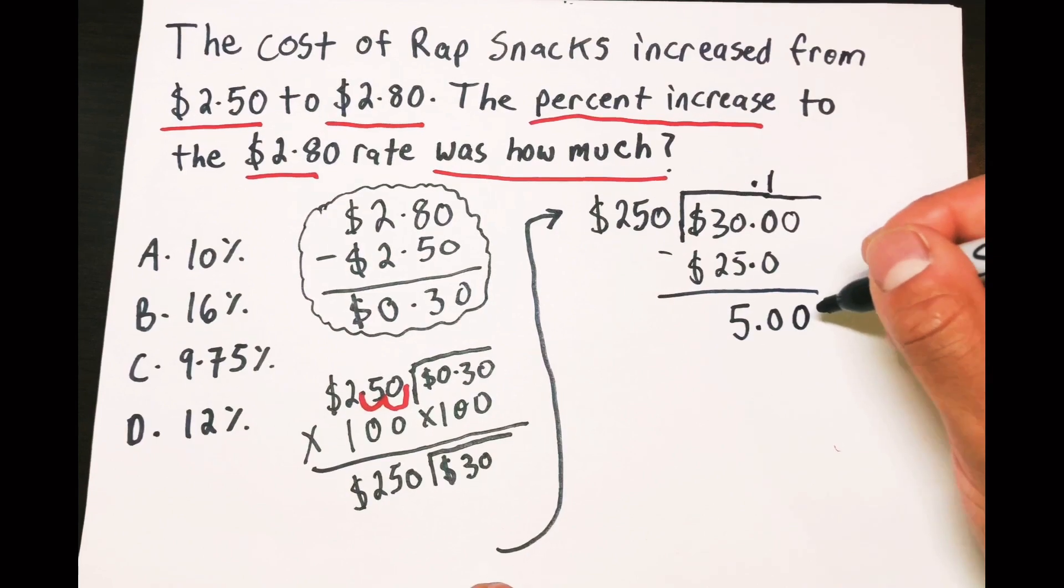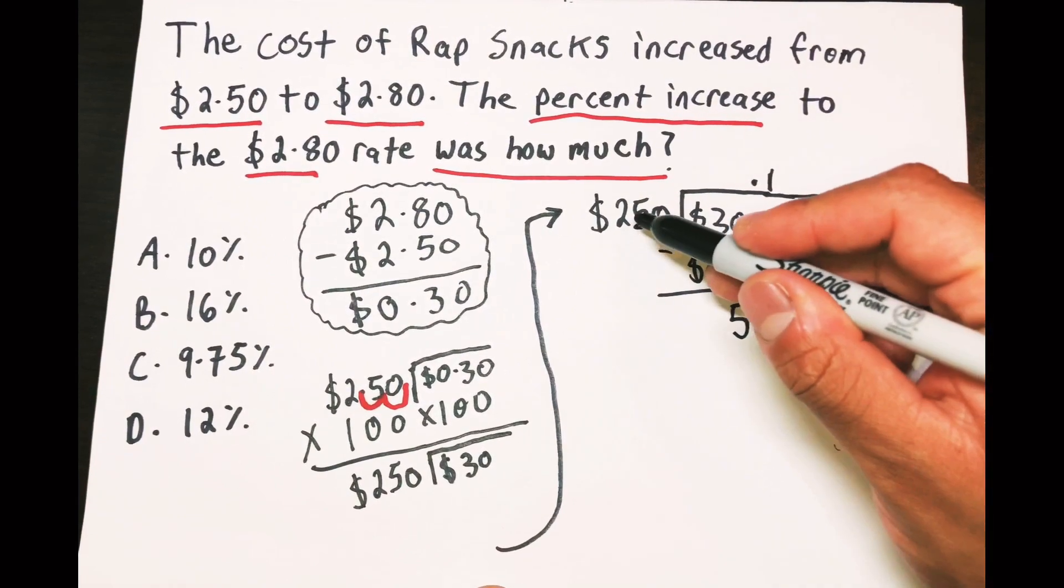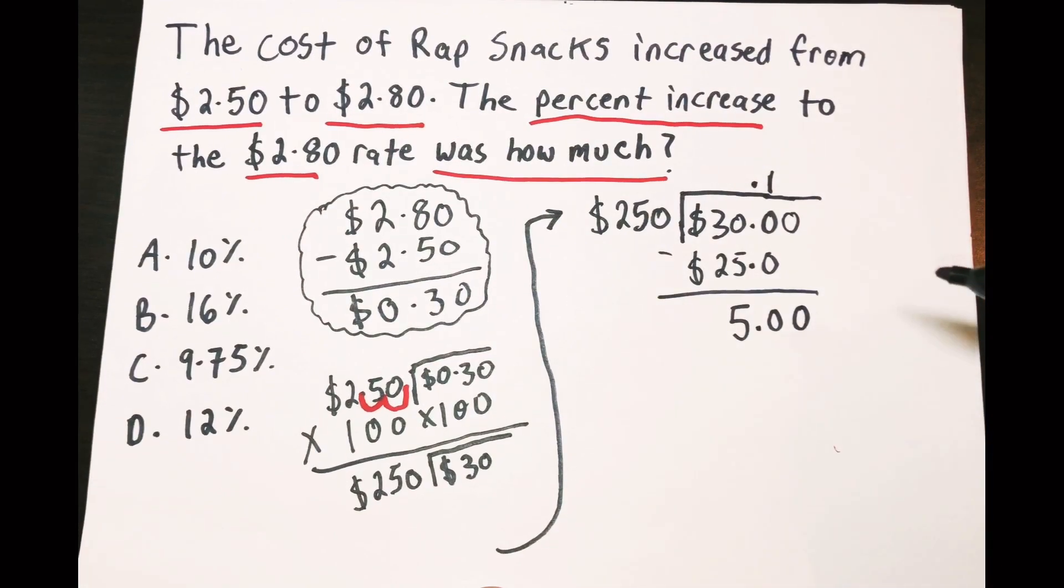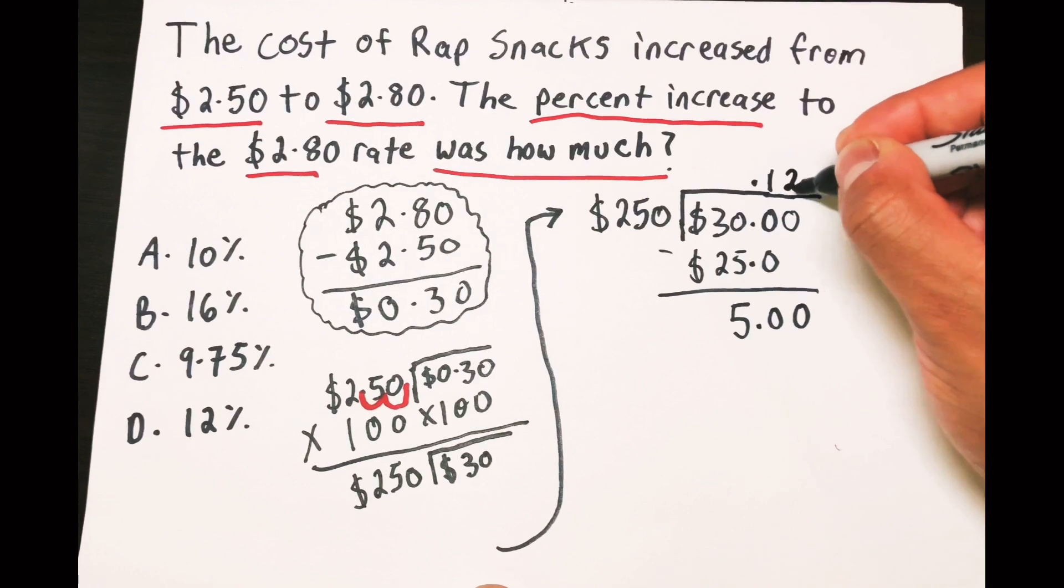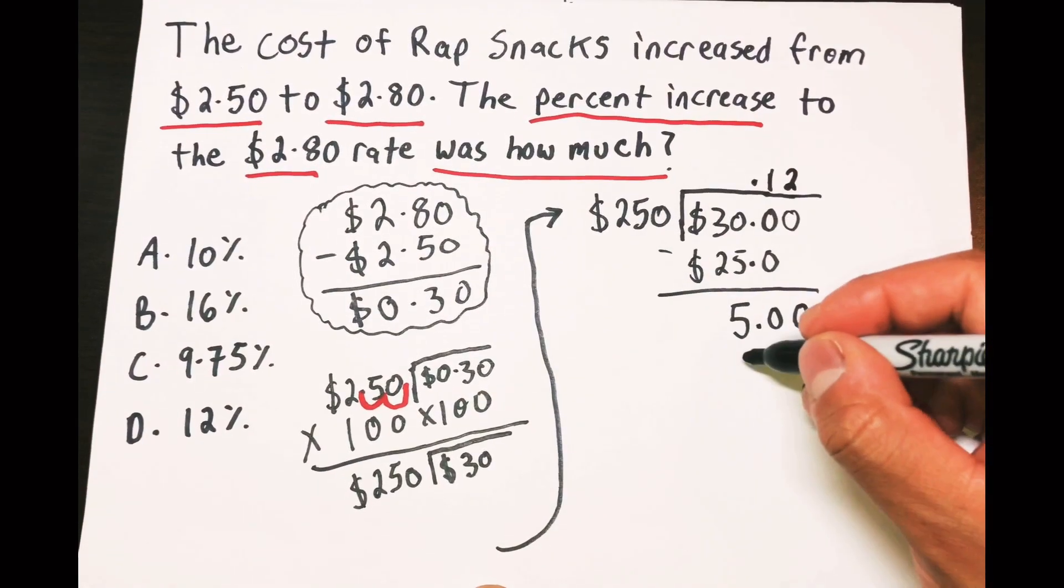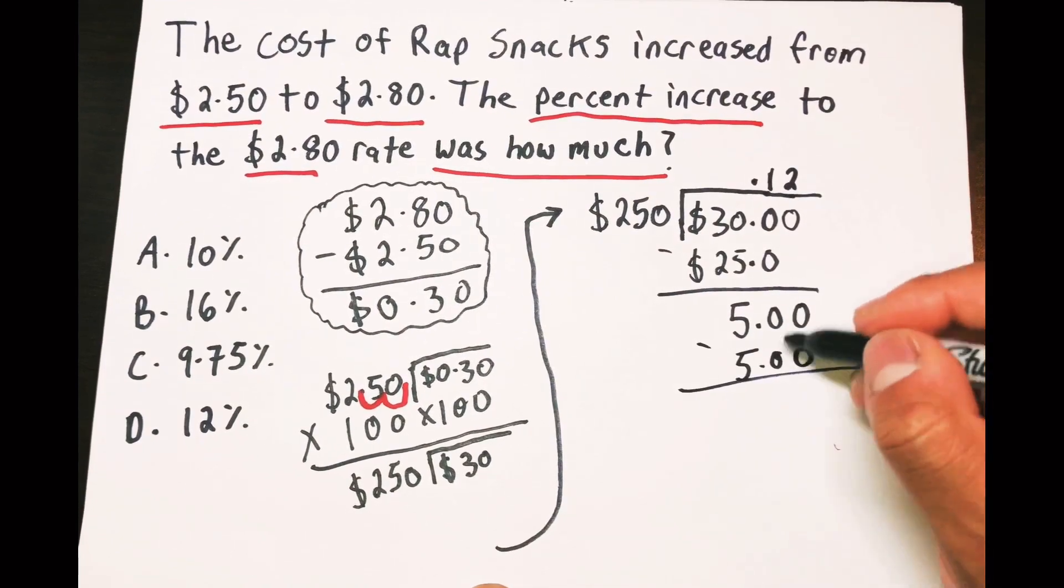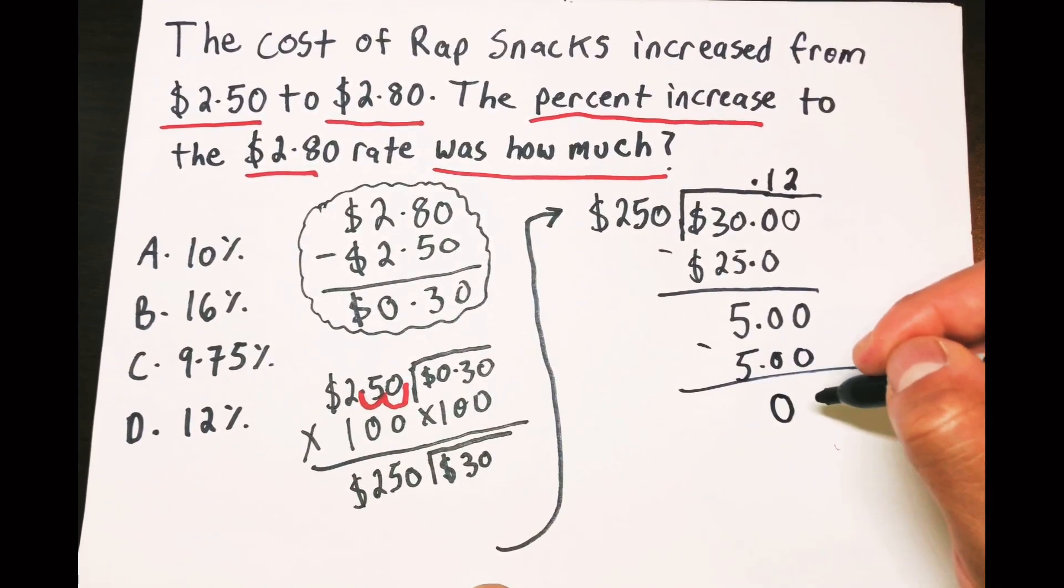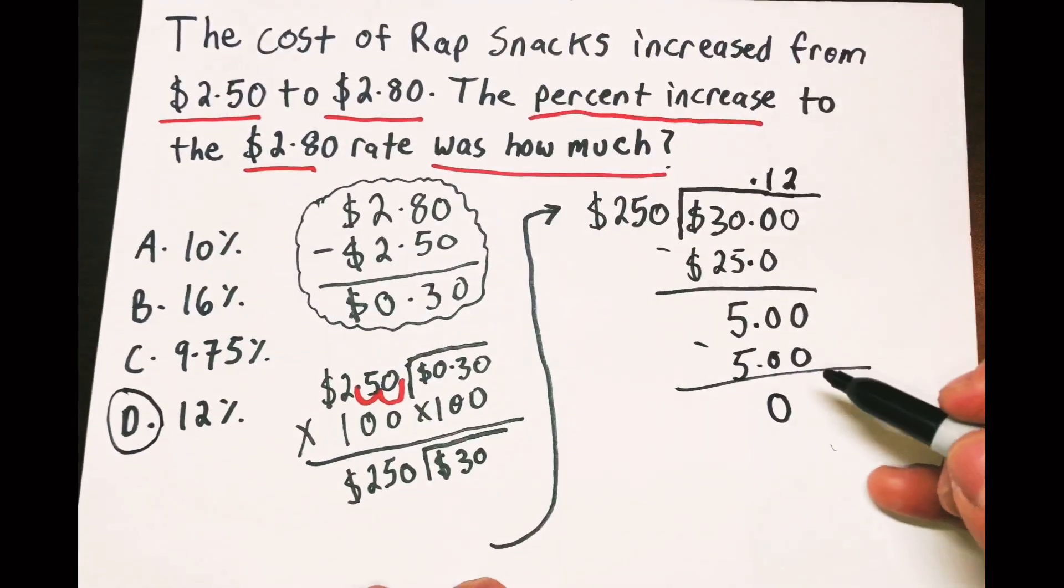Okay, so we're gonna treat this like 500. How many times does 250 go into 500? It goes into it twice because two times 250 is 500. So we'll put a two there. Two times 250 is gonna give me the 500. You take 500 from 500 and you get a zero. Okay, and it looks like D is the answer.